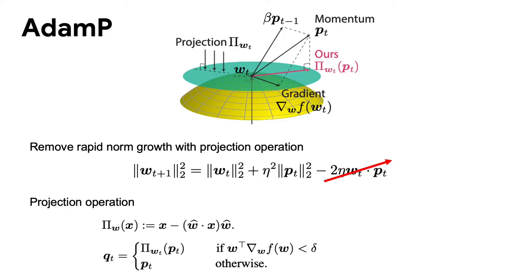To cope with the rapid norm increase, we propose a solution based on a projection operation. If the projection is performed on a scale invariant parameter, it removes the rapid norm growth and the optimizer maintains the original direction.